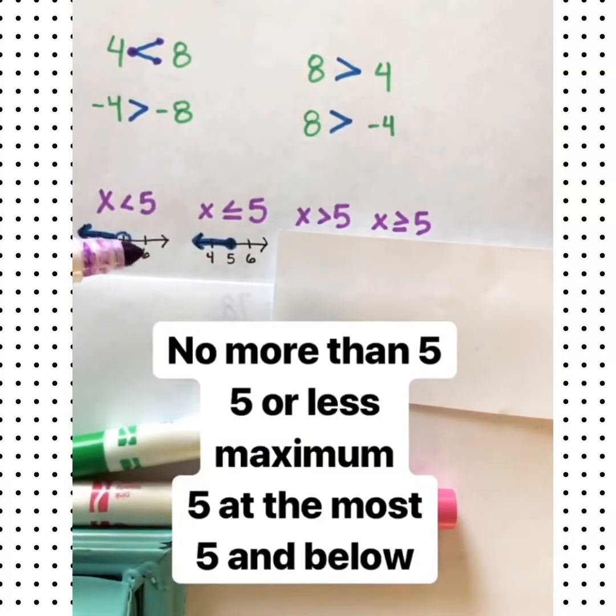In a word problem, you might see words like no more than 5, 5 or less, a maximum of 5, 5 at the most, 5 and below.